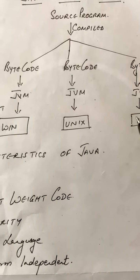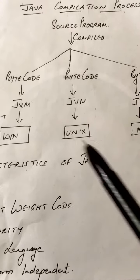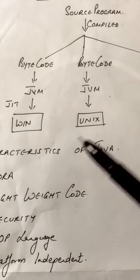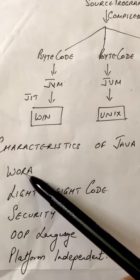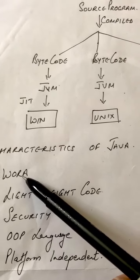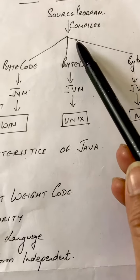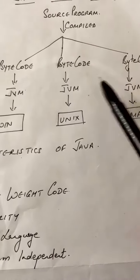So this is the Java compilation process. Now we come to characteristics of Java. WORA: write once, run anywhere. You have to write it once and you can run it on as many machines as you want.